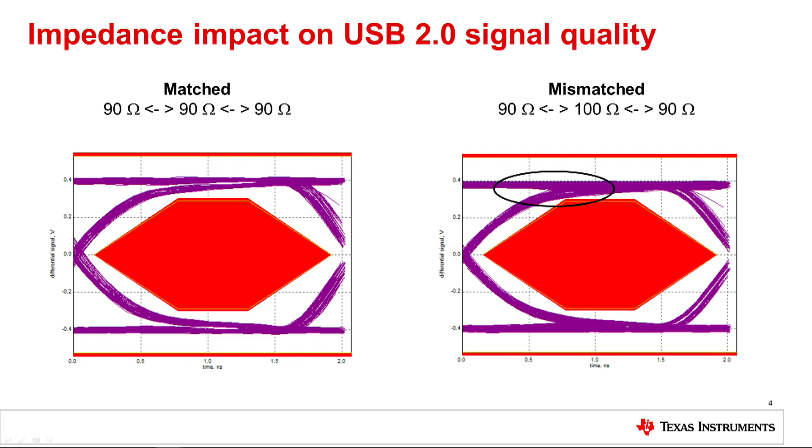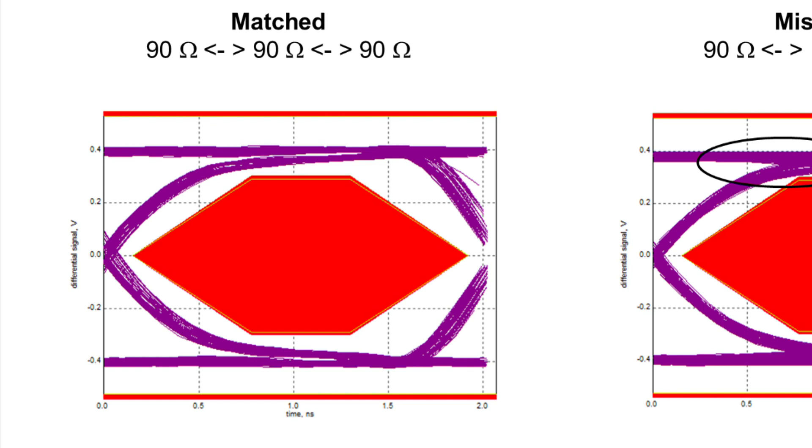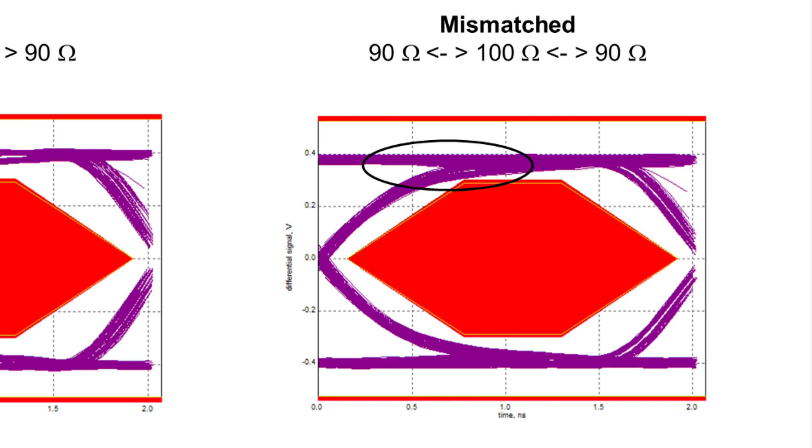Impedance can have a noticeable impact on signal quality. We can analyze the signal quality by using an eye diagram. On the left is an eye diagram from a 90-ohm differential source passing through a 90-ohm differential layout, terminating in a 90-ohm differential load. On the right is an eye diagram for a 90-ohm differential impedance source passing through a 100-ohm differential layout and terminating in a 90-ohm differential load. The impact from the reflections can be seen as the closing of the left side of the eye. A longer section of mismatched layout would result in impact to the entire eye.